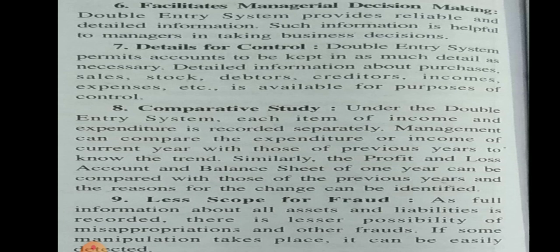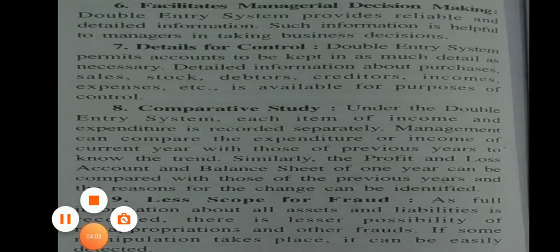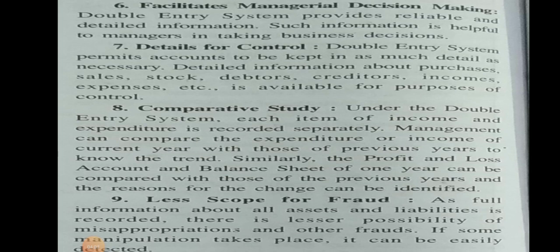The sixth point is facilitates managerial decision making. The double entry system provides reliable and detailed information. Such information is helpful to managers in taking business decisions. The double entry system provides reliable information about every transaction, and this information is very helpful to managers to take decisions on the basis of the information provided.